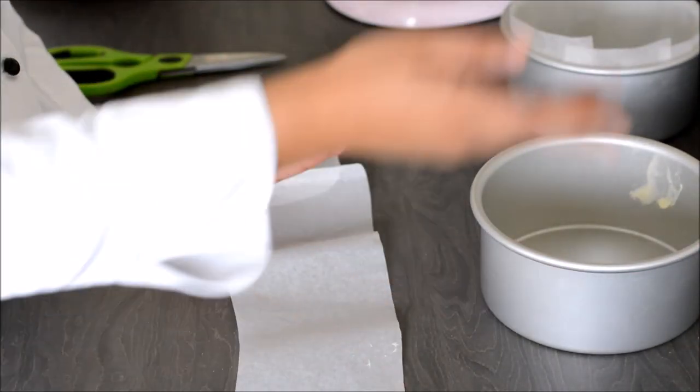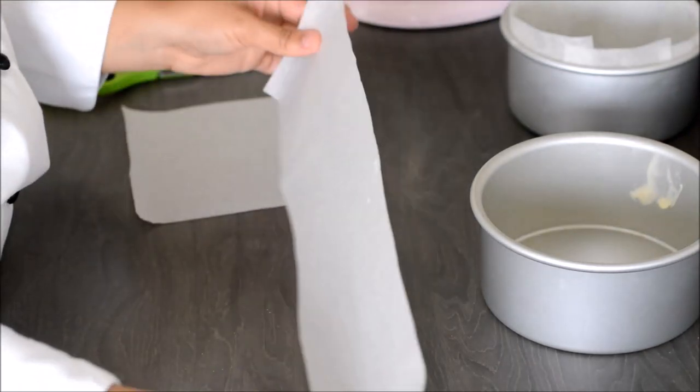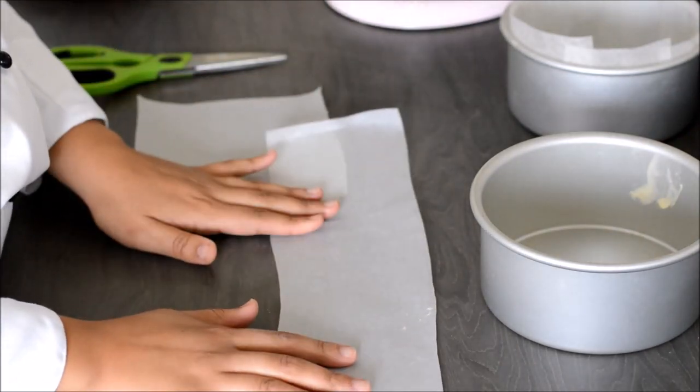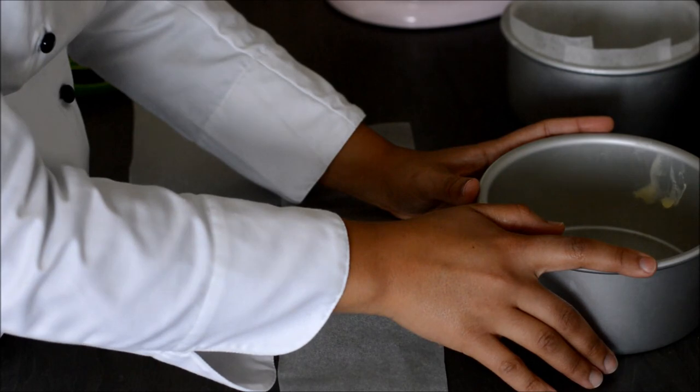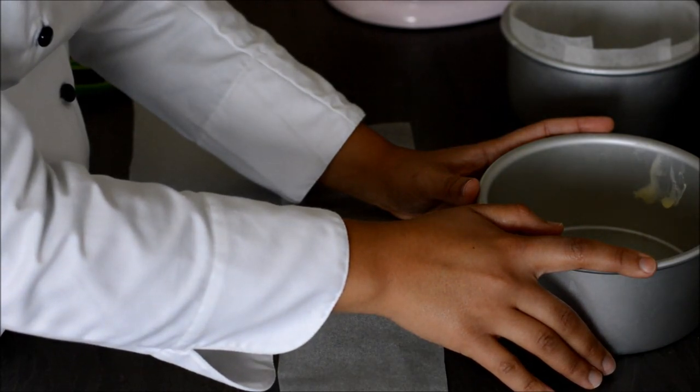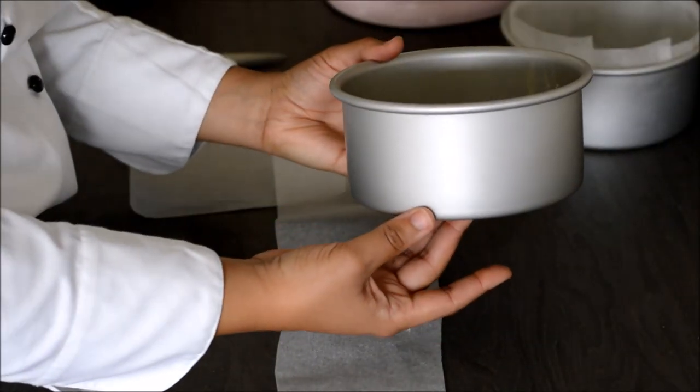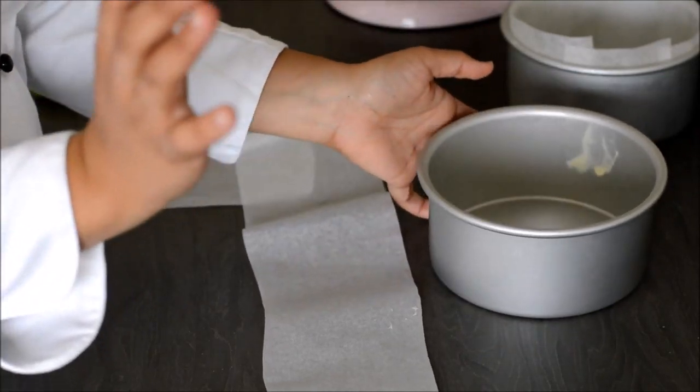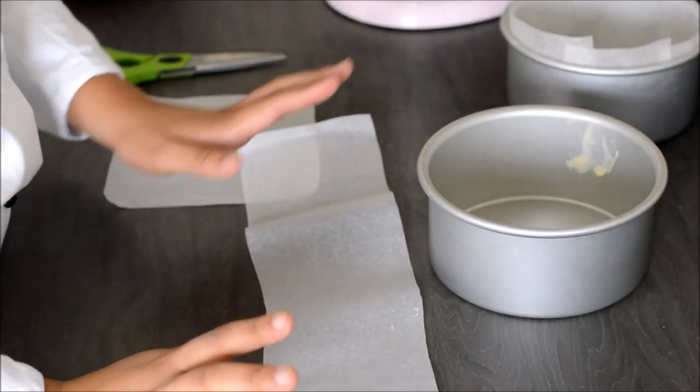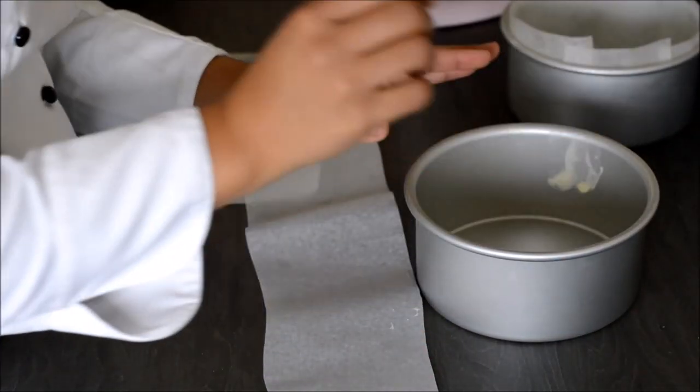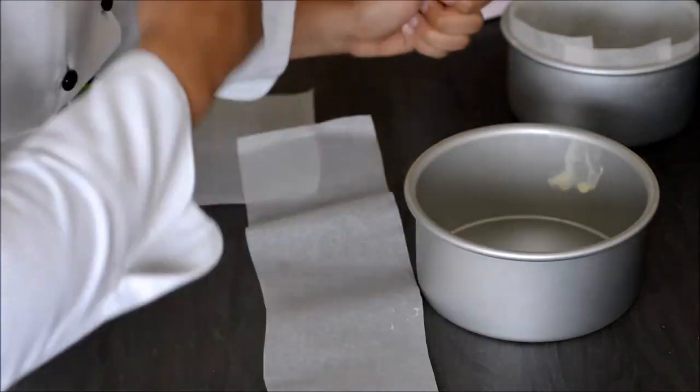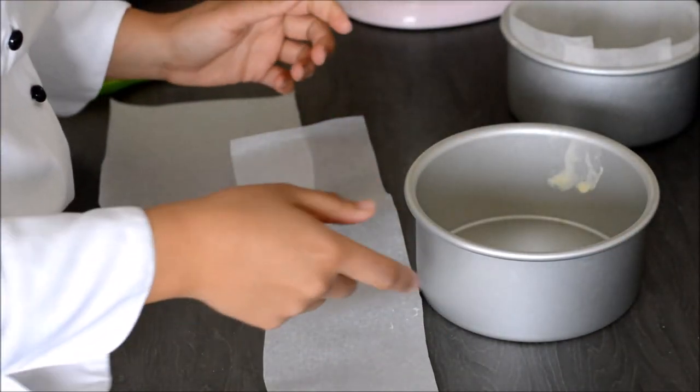To work out the circumference that you need, a bit of math, you want to measure the diameter of your tin. So this is six inches and we're going to multiply this by pi which is 3.14. So you can do that and you can measure it out or you can just wrap your roll around here and cut it to size.